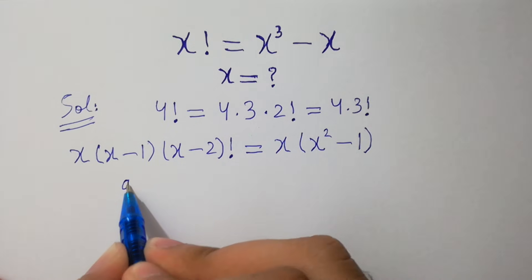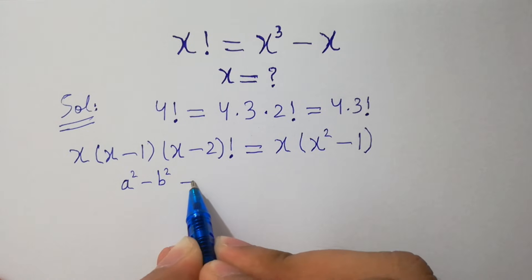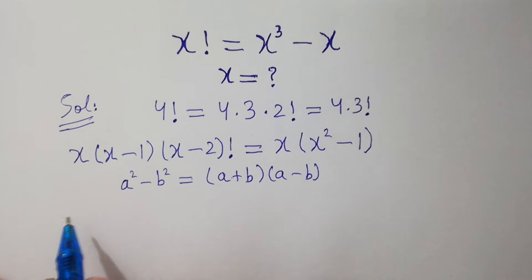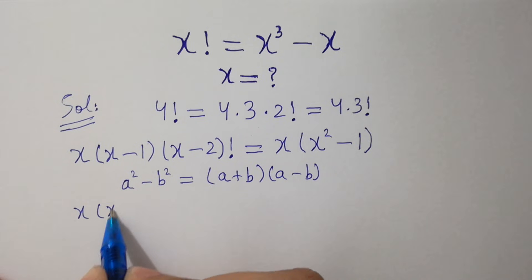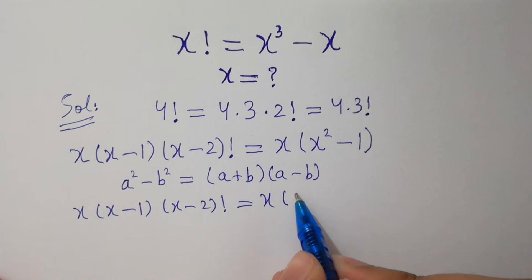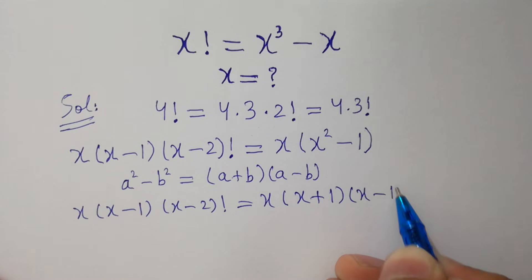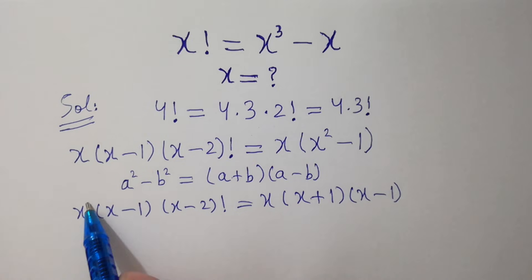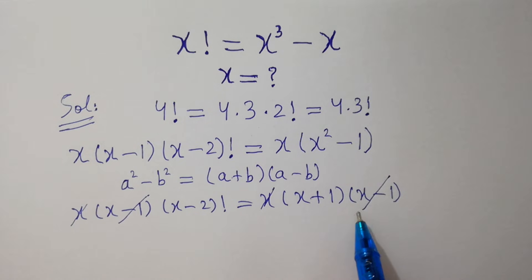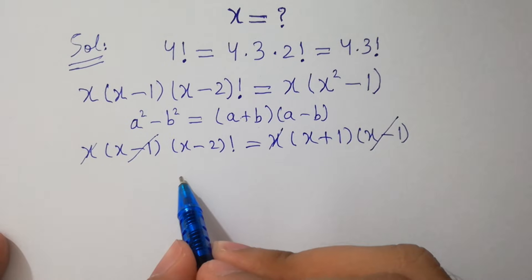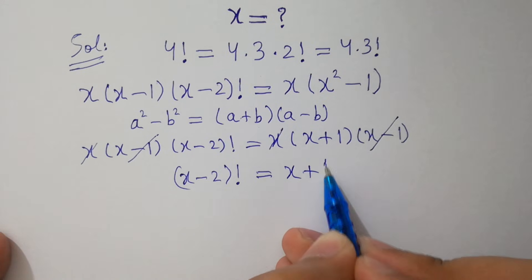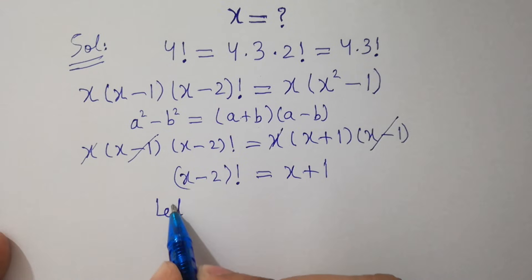As we know that a squared minus b squared equals (a plus b)(a minus b), so this equation will be equal to x times (x plus 1) times (x minus 1). Then x and x cancel, and (x minus 1) and (x minus 1) also cancel, giving us (x minus 2) factorial equals (x plus 1).